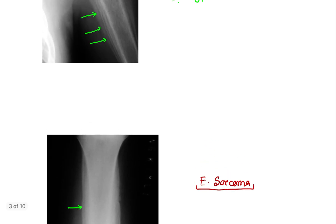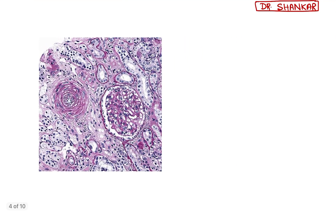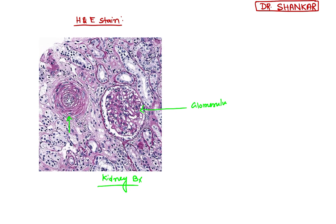Next, coming to another image — our second image. This is a biopsy image, a hematoxylin and eosin (H&E) stain image showing onion skin peel appearance. This is a kidney biopsy specimen. Here you can see the glomerulus, and this is an artery with vascular smooth muscle proliferations around it.